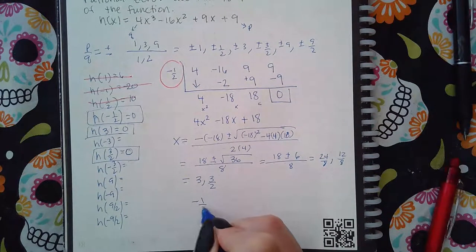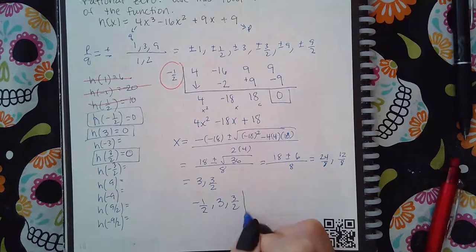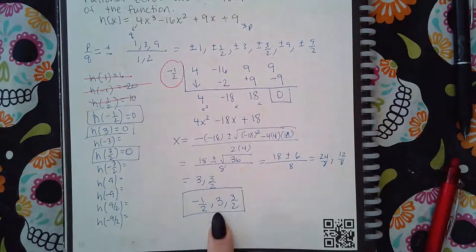So what is the complete answer? There's three of them. It's negative one-half from the beginning, three, and then three-halves. Those are all of the zeros.